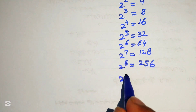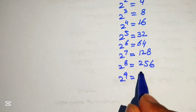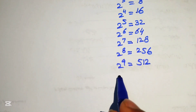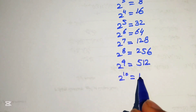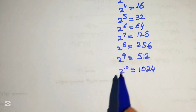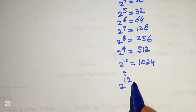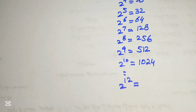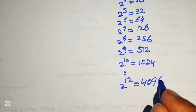2 to the power of 9 equals 512, and 2 to the power of 10 equals 1024. Similarly finding the product up to 2 to the power of 12: 2 to the power of 12 equals 4096.